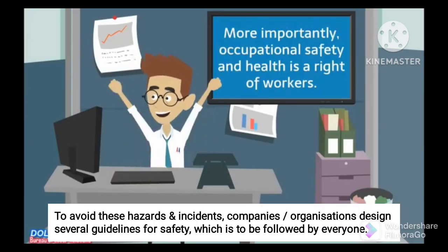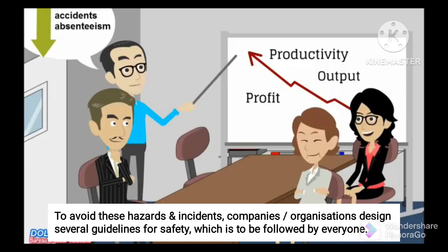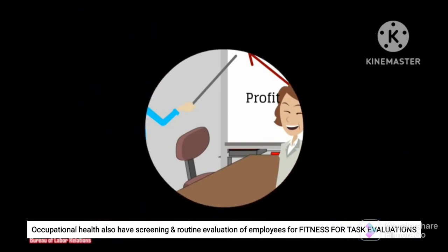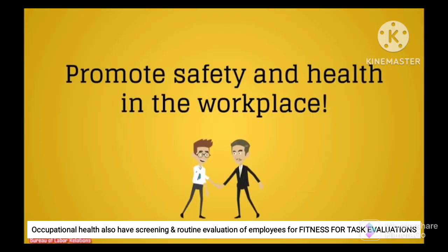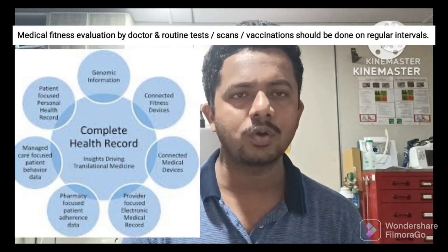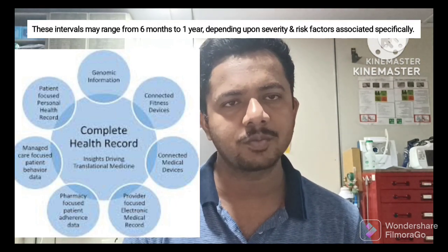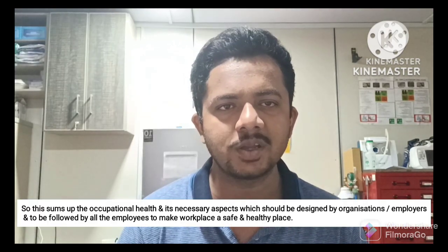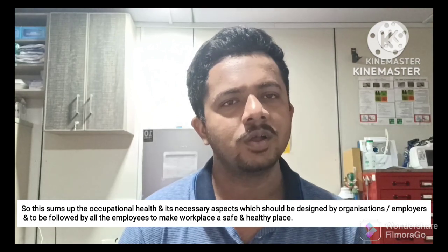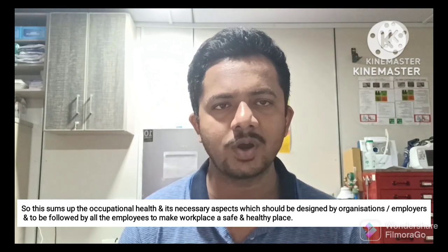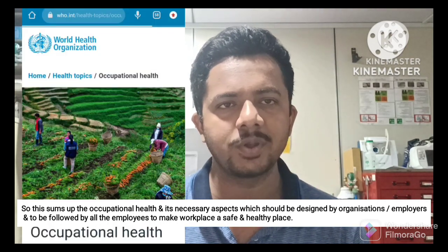These are the things that ensure your organization has multiple safety protocols and guidelines. Above all, occupational health also has medical well-being and fitness-for-task aspects, depending on the severity and risk factors. These are all aspects of occupational health. To ensure a safe workplace, there is a contribution required from both sides — employer and employees. If you follow both sides, then you can create a good environment. Thank you.